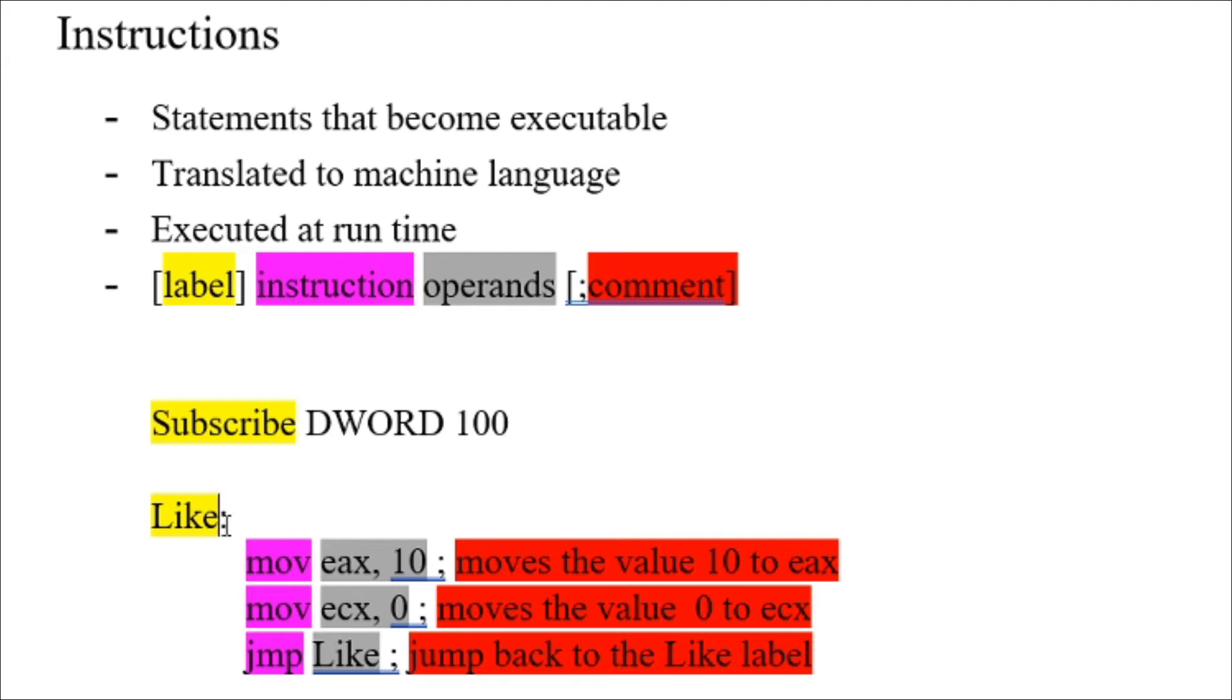The next one are instruction mnemonics, or instructions for short. Instruction mnemonics are required and are basically the commands that you input. Examples include mov, add, sub, mul, jmp, etc. We will discuss those in future videos. As you can see here, an example of an instruction is mov and jmp.